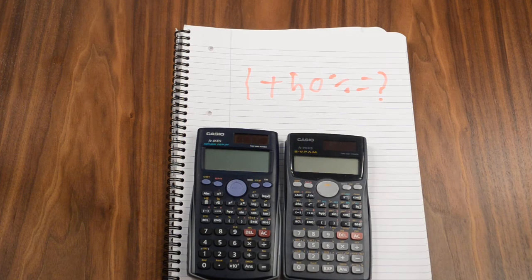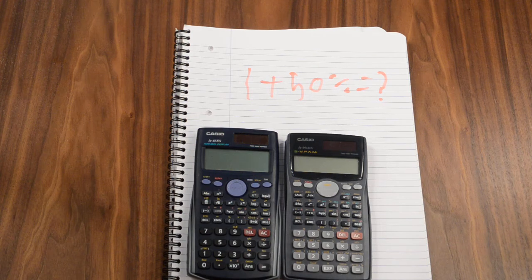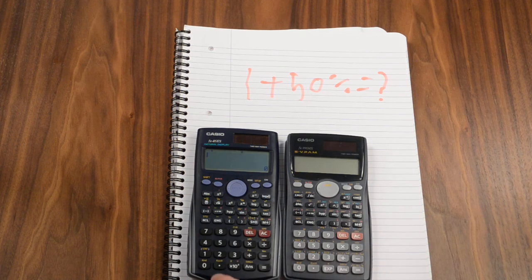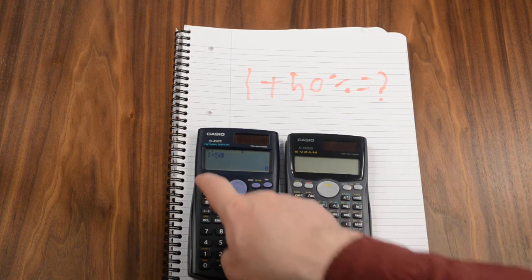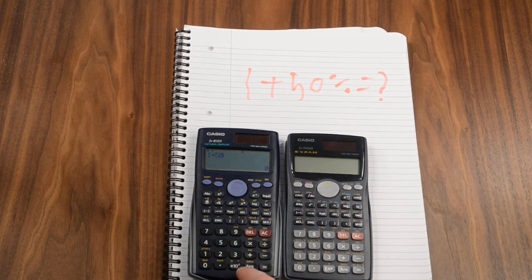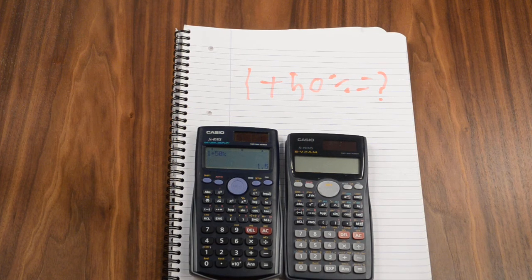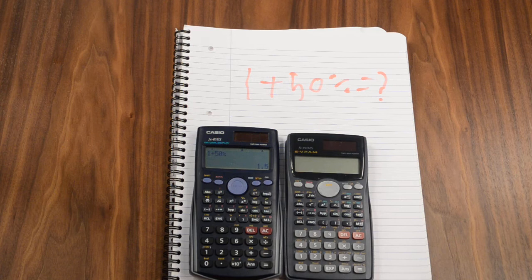So, let's start off with the FX85ES, turn it on. 1 plus 50%, shift, percent, equals 1.5, makes sense.